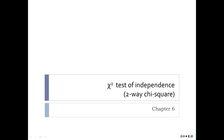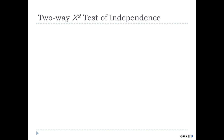This is the last of the Chapter 6 videos: the Chi-Square Test of Independence, sometimes known as the Two-Way Chi-Square. I'll be flopping back and forth between those terms. You know what the One-Way Chi-Square is now, so let's talk about the Two-Way.